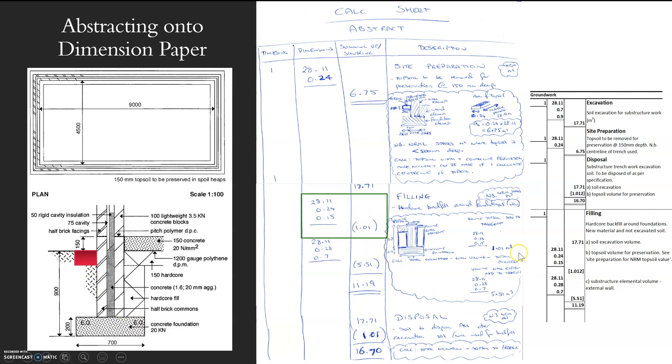It needs to be in meters cubed because NRM states that it needs to be in meters cubed. So I'm timesing my centre line by my width, which was above there, to get an area. But I'm timesing that then by the depth to get me my volume. And that volume is getting taken away from that 17.71. So we need to put it in brackets.